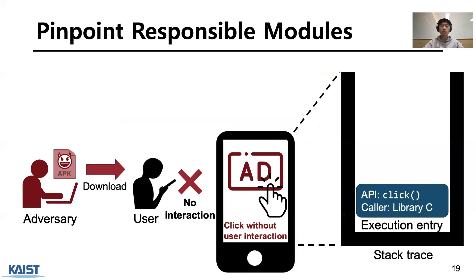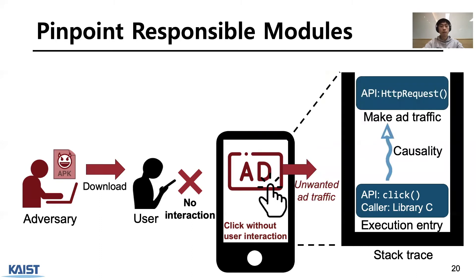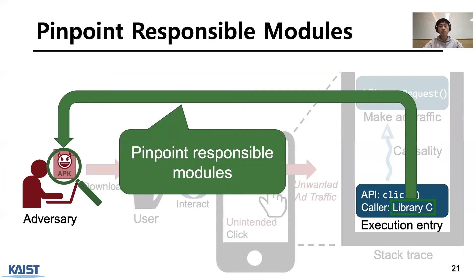If we can get a Stacktrace between a forged click and fraud ad traffic, we can identify the fraud-responsible module. When an ad click occurs, our system starts making a Stacktrace and saves it at the point of click occurrence. If the system can compute the Stacktrace from click occurrence to ad traffic occurrence, we can conclude that ad traffic was caused by the forged click. Also, the Stacktrace contains information about who called the click — the module, Library C, that invokes the click is responsible for the ad fraud.